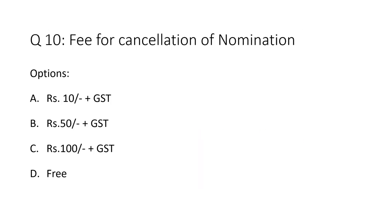Question 10: Fee for cancellation of nomination. Option A: rupees 10 plus GST. Option B: rupees 50 plus GST. Option C: rupees 100 plus GST. Option D: free of cost. The correct answer is Option B — rupees 50 plus GST.